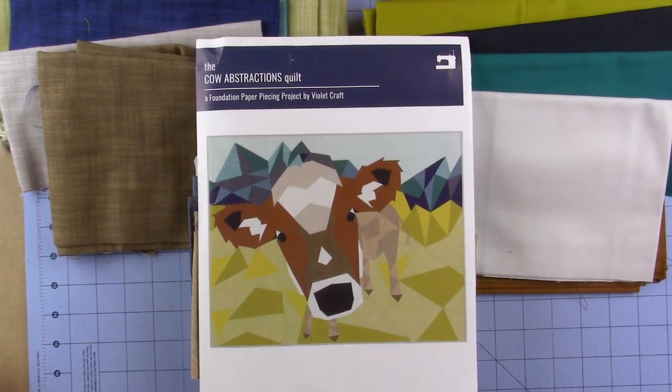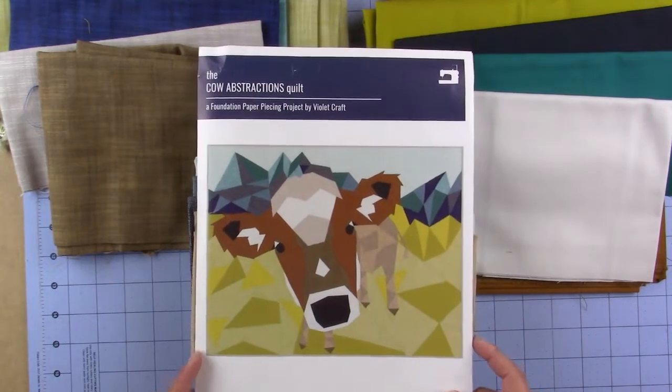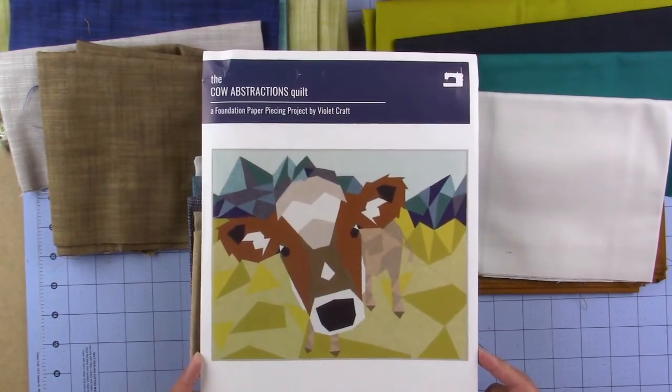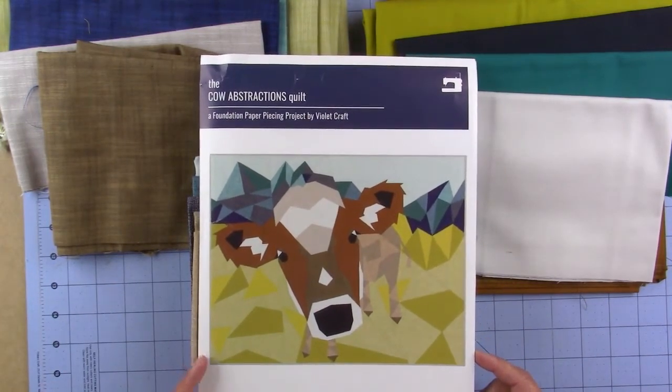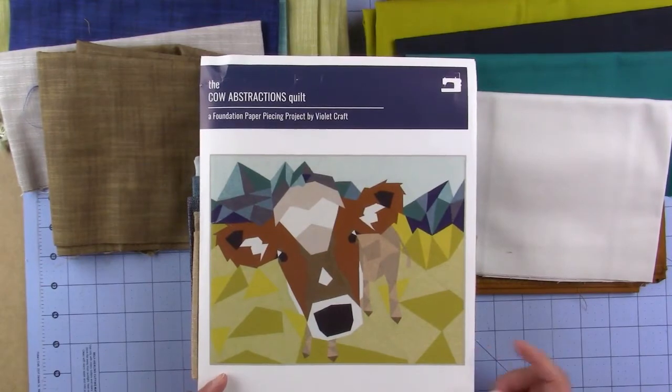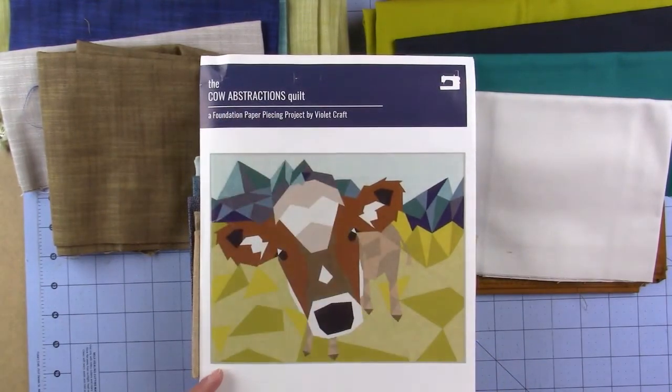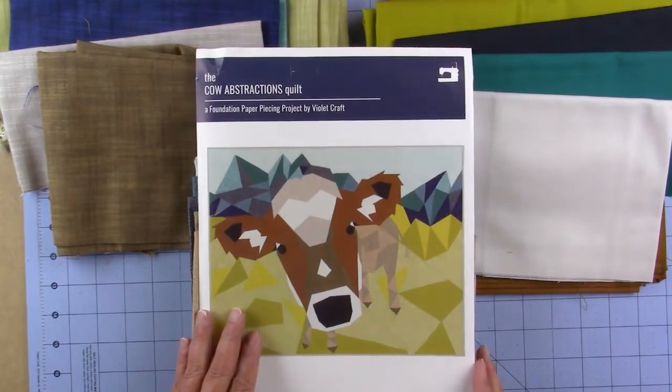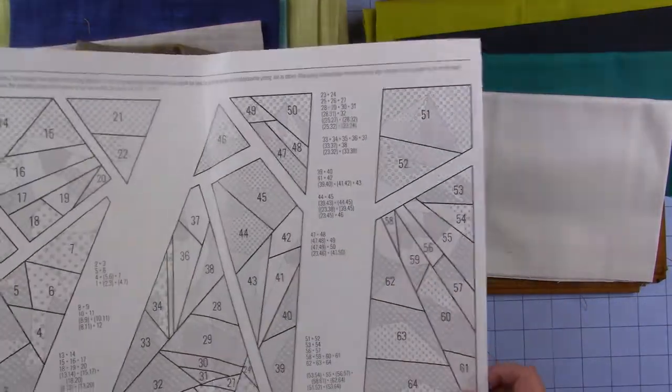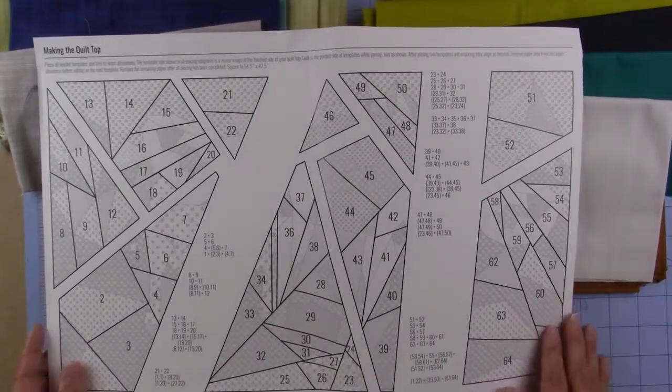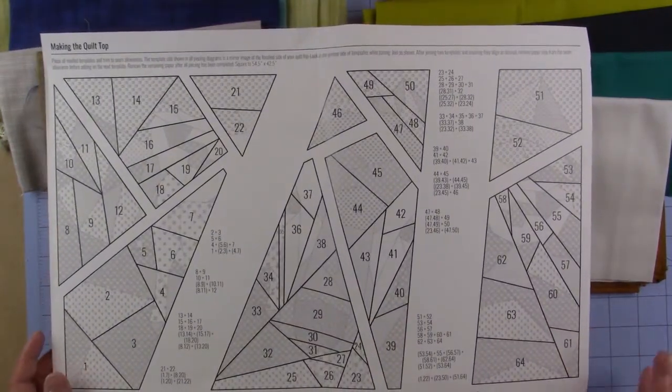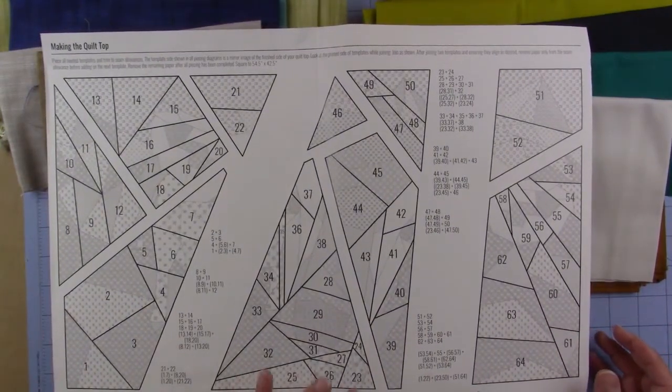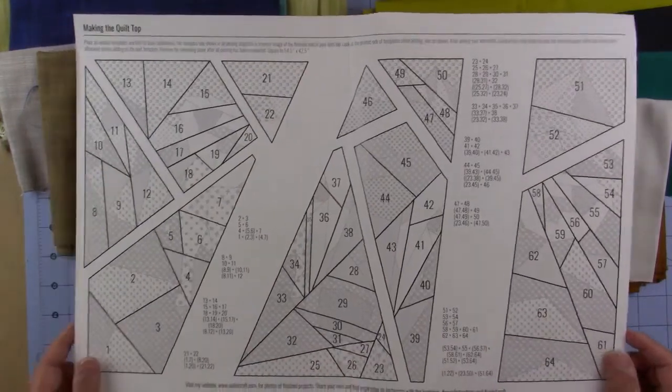The next project I'm going to be working on is the foundation paper piecing project by Violet Craft called the Cow Abstractions quilt. He's such a cute little cow. A lot of people don't understand how to use her prep patterns, so I'm going to show you how to use the patterns.